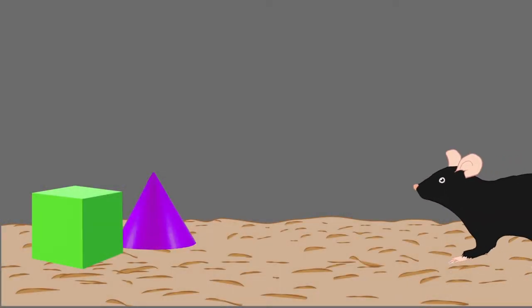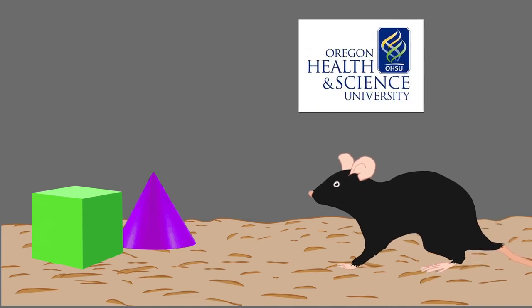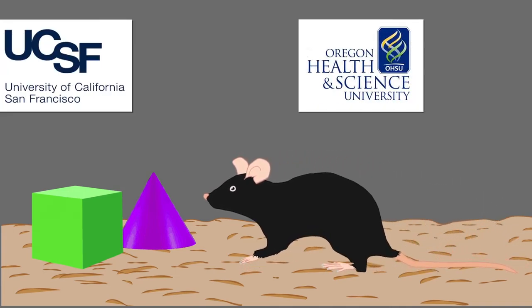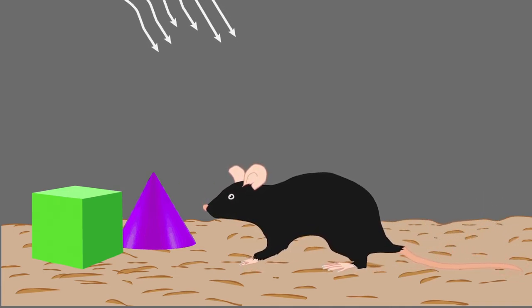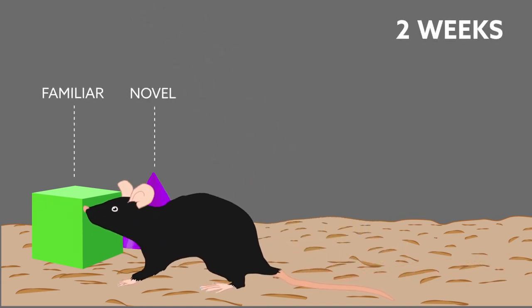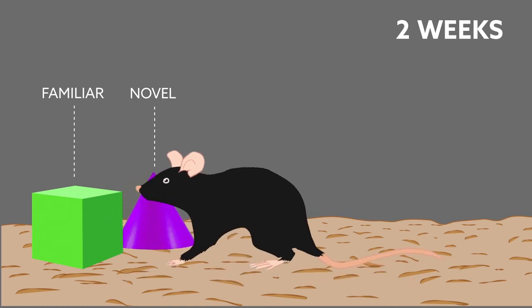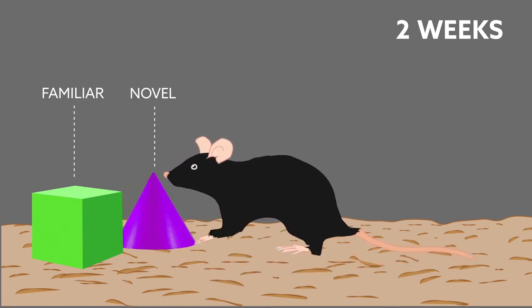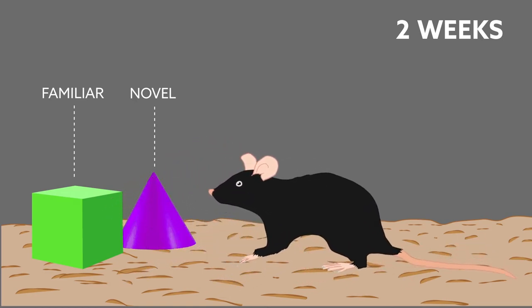To find out what damage these particles do, researchers at Oregon Health and Science University and UCSF irradiated mice with accelerated iron nuclei and then tested their memories. The scientists found that mice receiving certain doses of radiation had trouble recognizing new objects in their environments two weeks later.